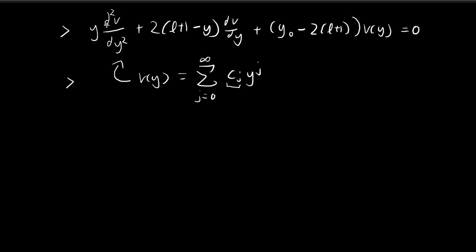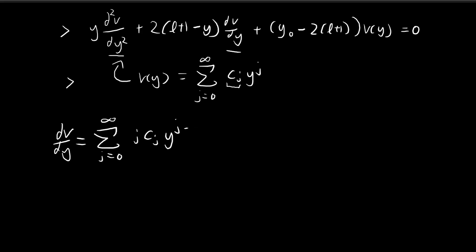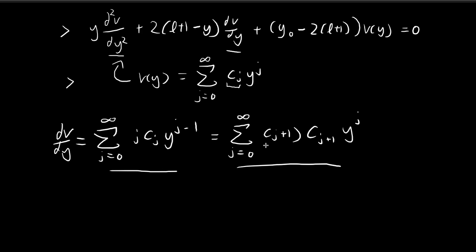To substitute this expression into the differential equation, I need to take the first and second derivatives. Taking the first derivative is straightforward — you pull the j down and get y to the power of j minus 1. I'm going to perform a little trick and express this slightly differently: instead of writing j·c_j, I write it as (j+1)·c_{j+1}·y^j. This is just a different way of expressing the exact same thing, as you can verify by substituting values.